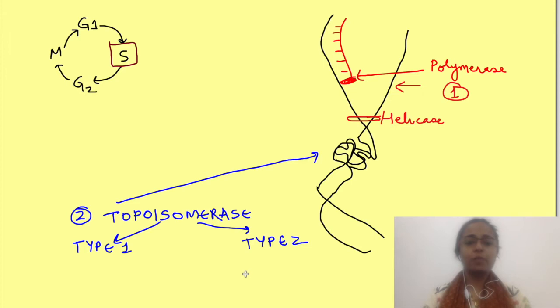Type 1 cleaves only one strand of DNA and relaxes DNA coils, while type 2 breaks both the strands, then it unwinds them and then reseals them. This is important for replication, repair as well as transcription.